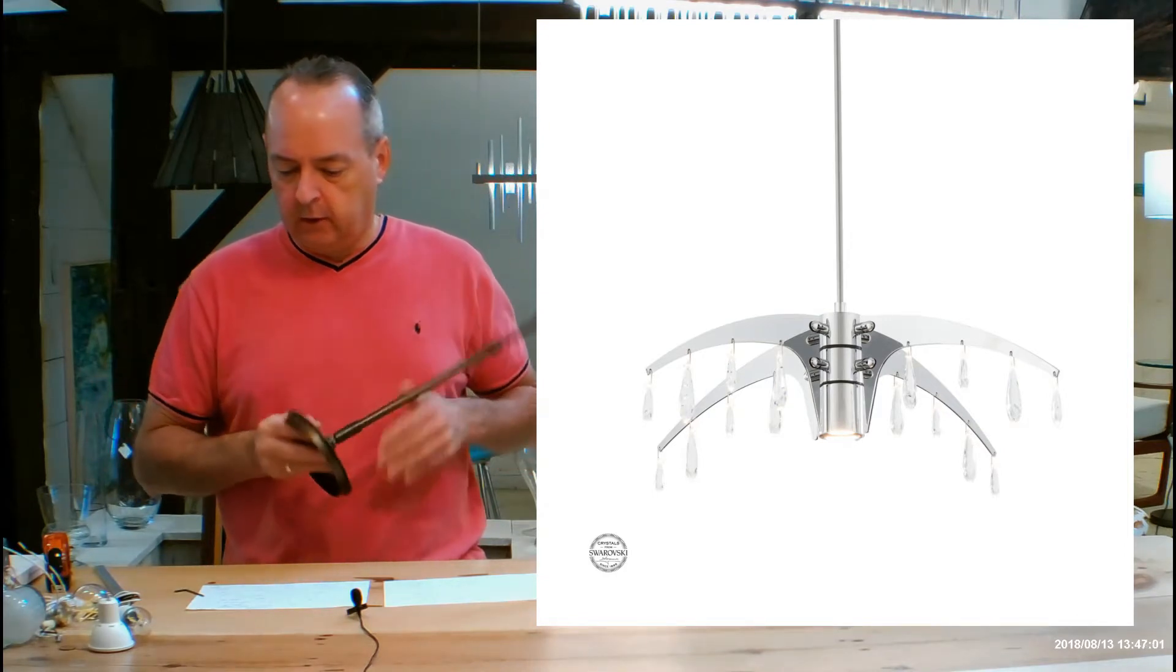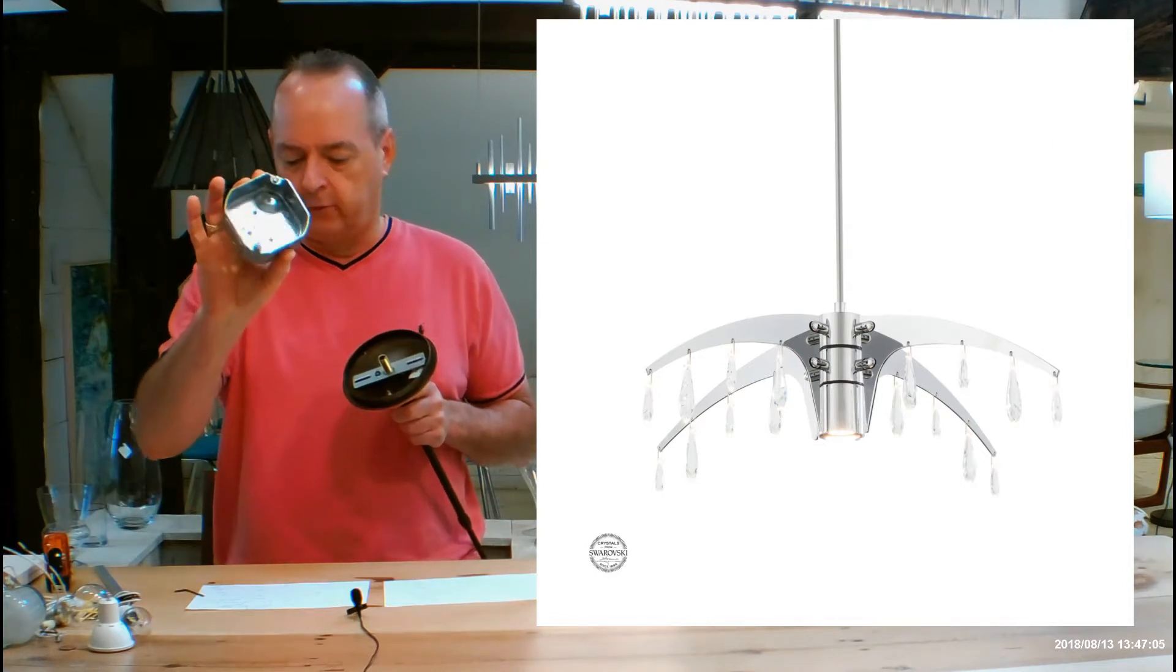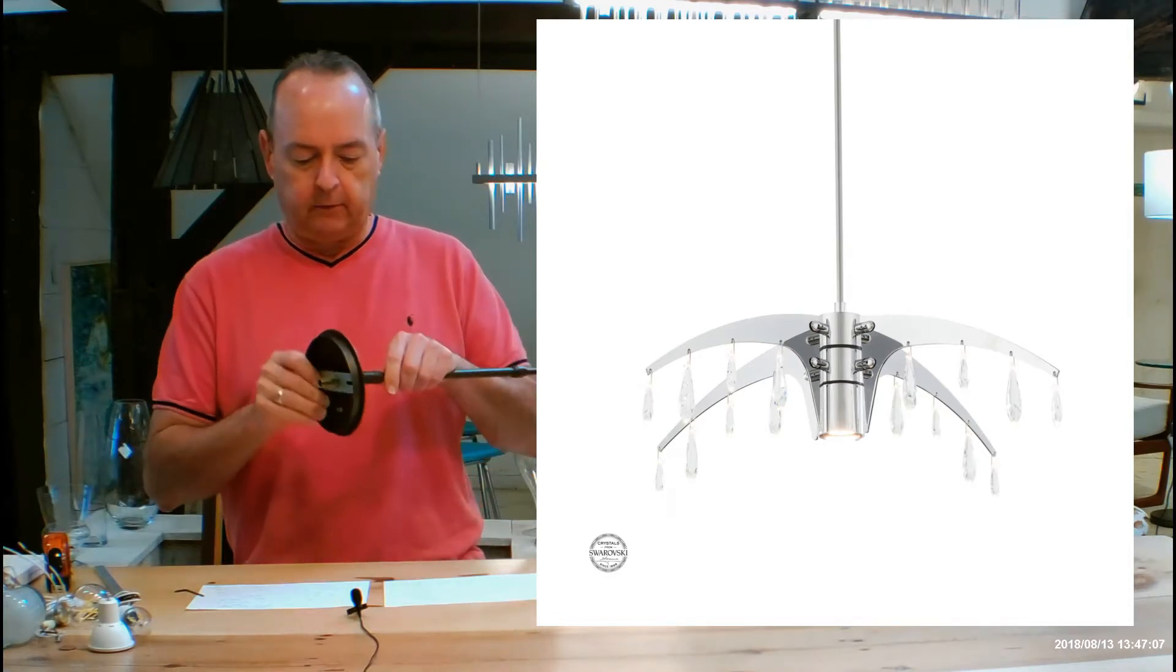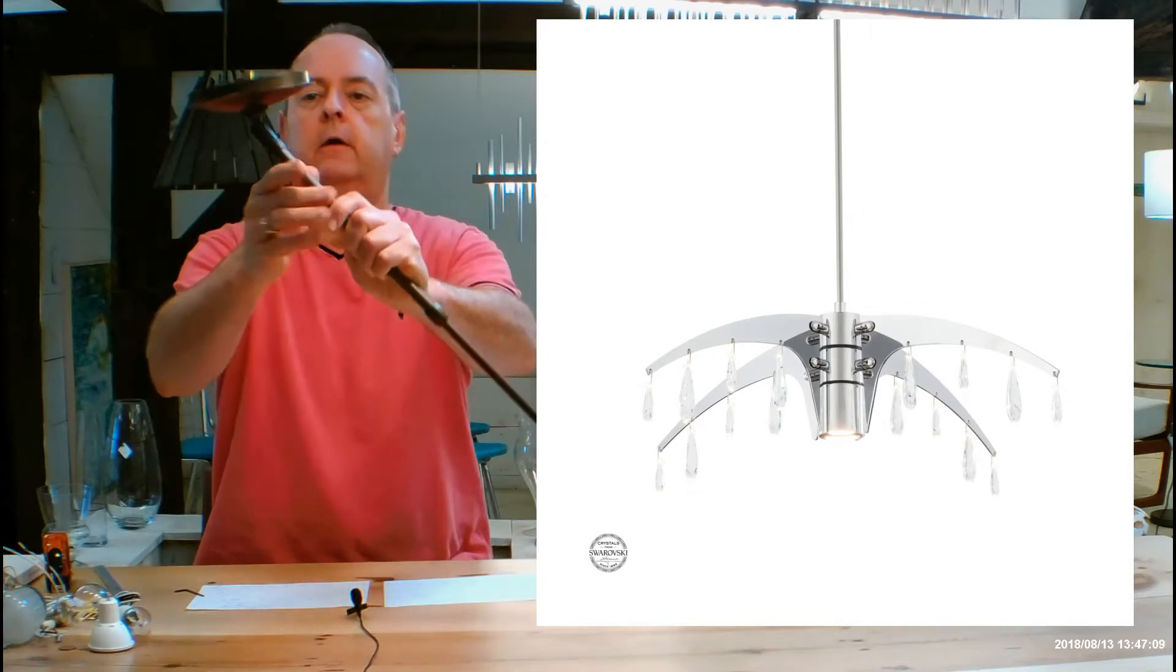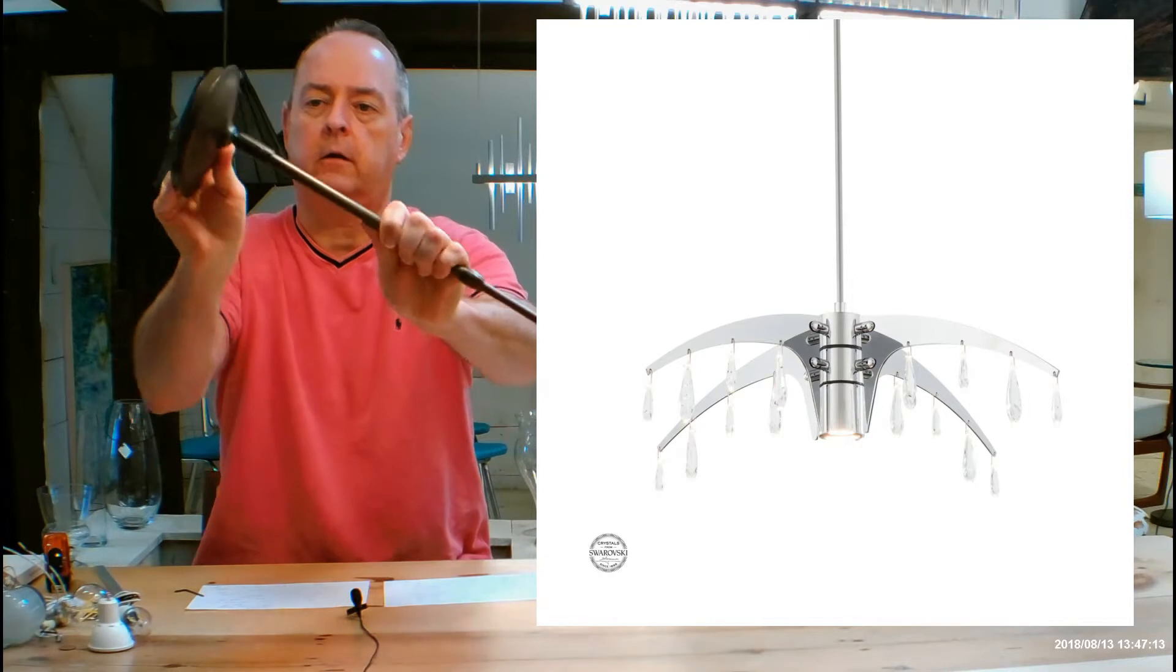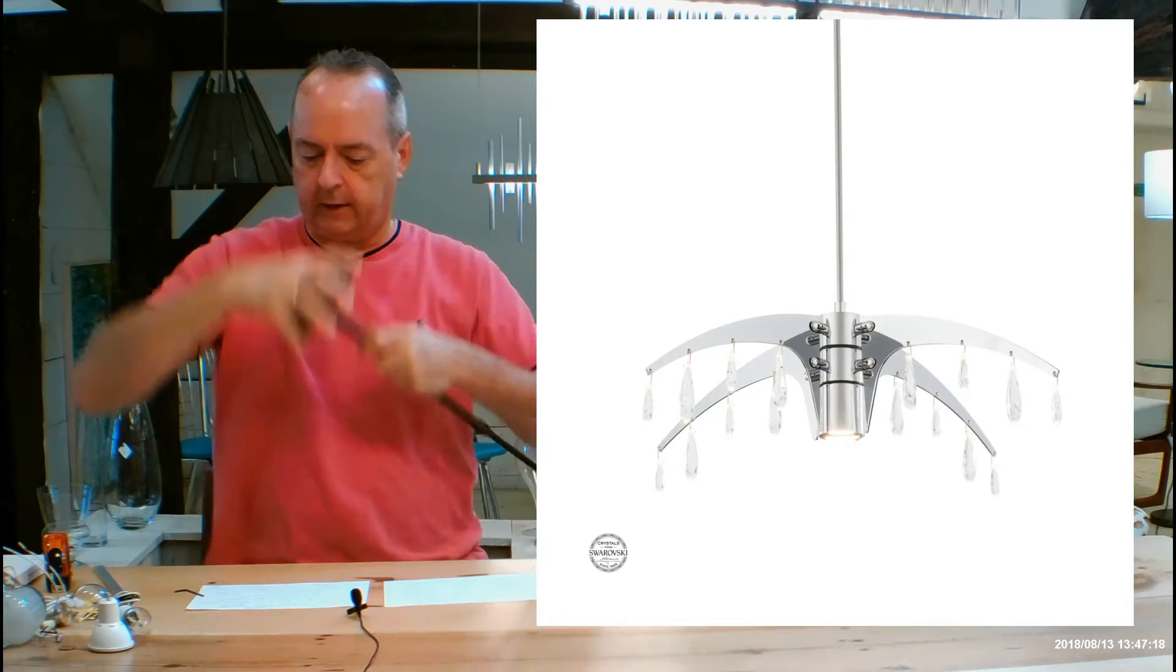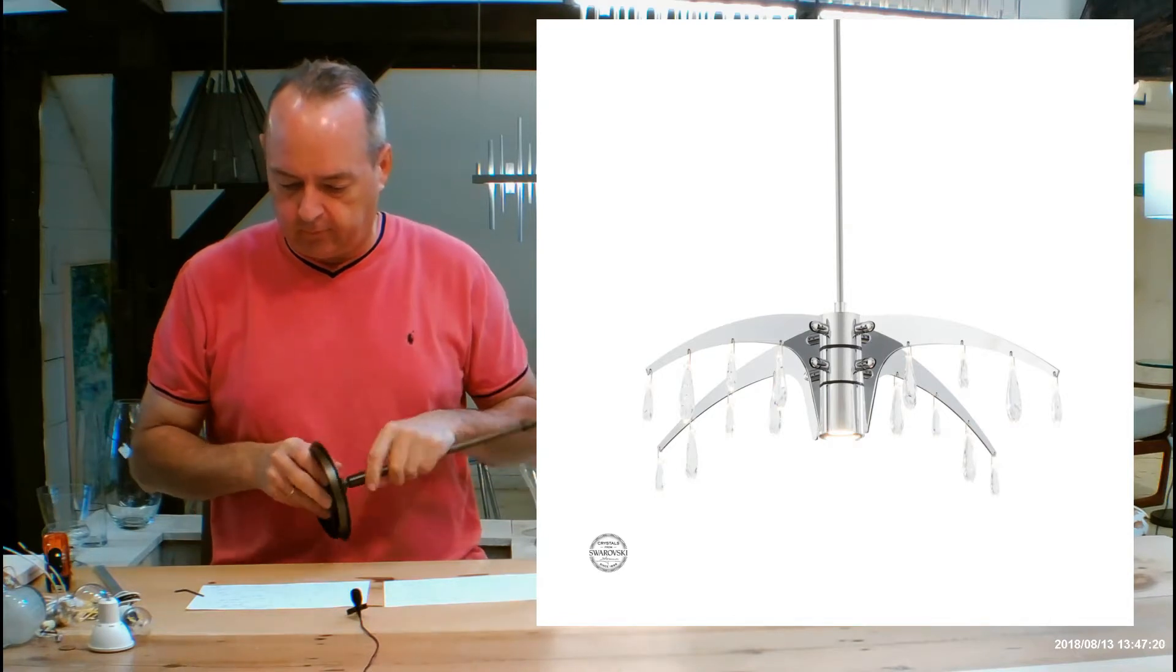The canopy on the ceiling is going to go on a normal four-inch junction box, very easy. Slope ceiling adaptable to 45 degrees. There's a knuckle right there that allows us to bend like that, so you get your 45-degree slope, or it can be flat. We got you covered for both situations.